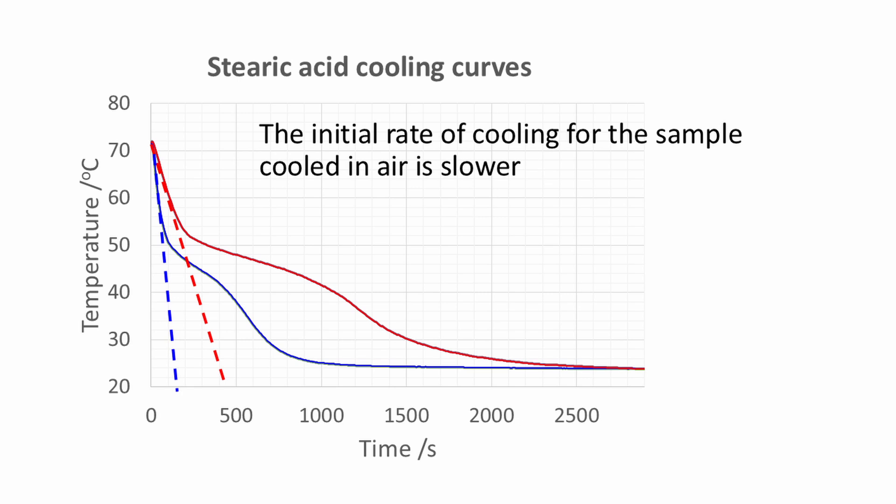The red dotted line is less steep than the blue dotted line. This shows that the initial rate of cooling for the sample cooled in air is slower.